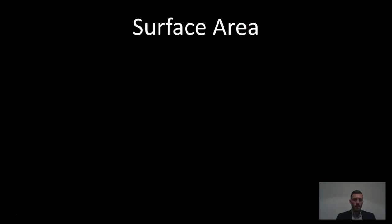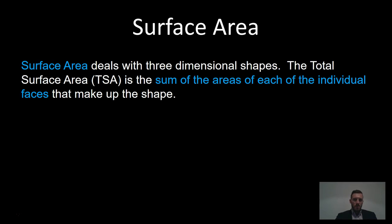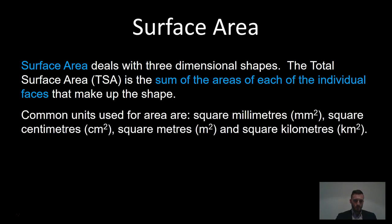Surface area deals with three-dimensional shapes. The total surface area is the sum of the areas of each of the individual faces that make up the shape. As we're still dealing with area, the units are still square millimetres, square centimetres, square metres, and square kilometres.